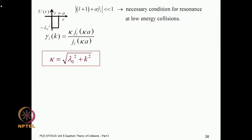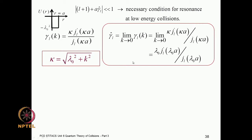For the square well potential, continuity of the wave function and its derivative is expressed through the logarithmic derivative gamma, given in terms of the Bessel function and its derivative with argument kappa times a. Here kappa is determined by the depth of the potential, minus lambda-zero squared, and also by the energy k². The limiting value gamma-hat is obtained as k tends to zero, giving kappa equal to lambda-zero.